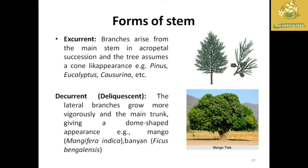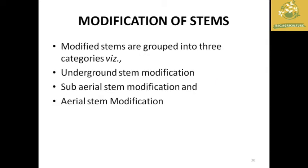Stem forms also include excurrent — branches form in acropetal succession giving the tree a cone-like appearance from top to bottom; examples: Pinus and Eucalyptus. Decurrent — lateral branches grow more vigorously than the main trunk giving a dome-shaped structure; examples: mango and banyan.